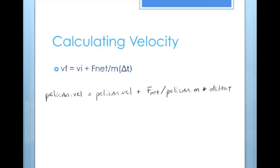From F net, we can calculate the final velocity using Newton's second law. V final equals V initial plus F net over m times delta t.